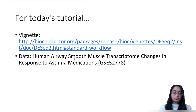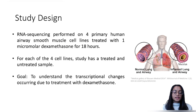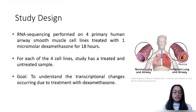We'll be using a publicly available dataset, also available as a Bioconductor package. In our dataset, RNA sequencing is performed on four airway smooth muscle cell lines which are treated with an asthma medication called dexamethasone. Dexamethasone is used by asthma patients to reduce inflammation in the airways. We have four cell lines, each with one treated and one untreated sample. The goal of our analysis is to understand the transcriptional changes occurring due to treatment with dexamethasone.